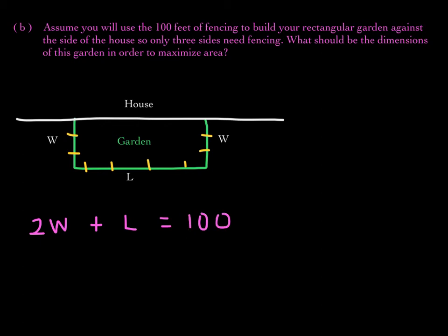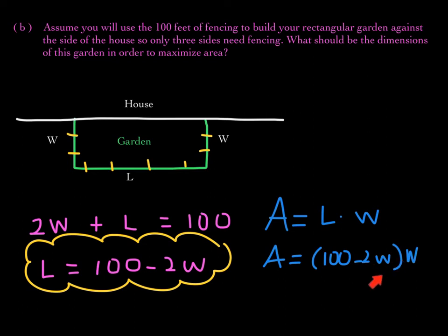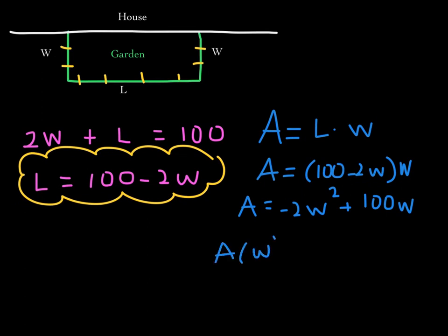Solving for l by subtracting 2w from both sides gives us l equals 100 minus 2w. We'll come back to this. The area is found by multiplying length times width, and the length is the same as 100 minus 2w. Distributing w gives us: area equals negative 2w squared plus 100w. Writing this in function notation: A of w equals negative 2w squared plus 100w.